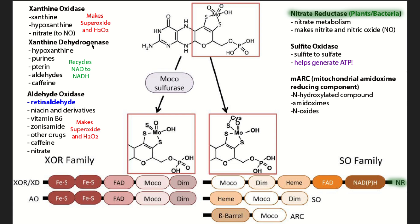Xanthine oxidase and xanthine dehydrogenase both make uric acid, but you really don't want too much xanthine oxidase. A thiol group converts xanthine dehydrogenase into xanthine oxidase. Xanthine dehydrogenase recycles NAD to NADH, but xanthine oxidase makes superoxide. The third enzyme is aldehyde oxidase, and it metabolizes retinaldehyde, niacin and its derivatives, vitamin B6, the drug zonisamide, caffeine, and also nitrates. This enzyme also makes superoxide and hydrogen peroxide.